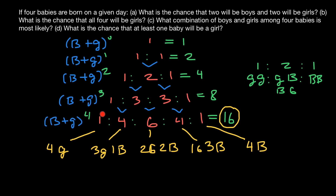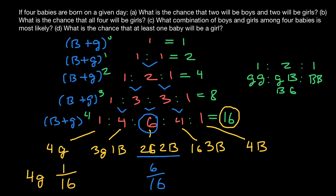So the probability of having all girls would be one out of 16. For question A — what is the chance that two will be boys and two will be girls? — this is the six-out-of-16 combination, so the answer is six out of 16. For question B — what are the chances that all four will be girls? — the answer is one out of 16.